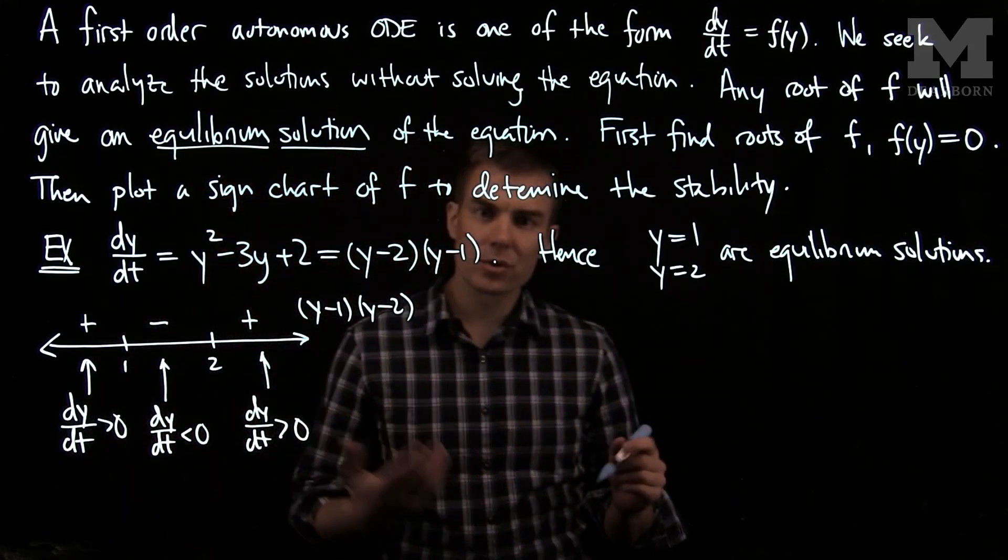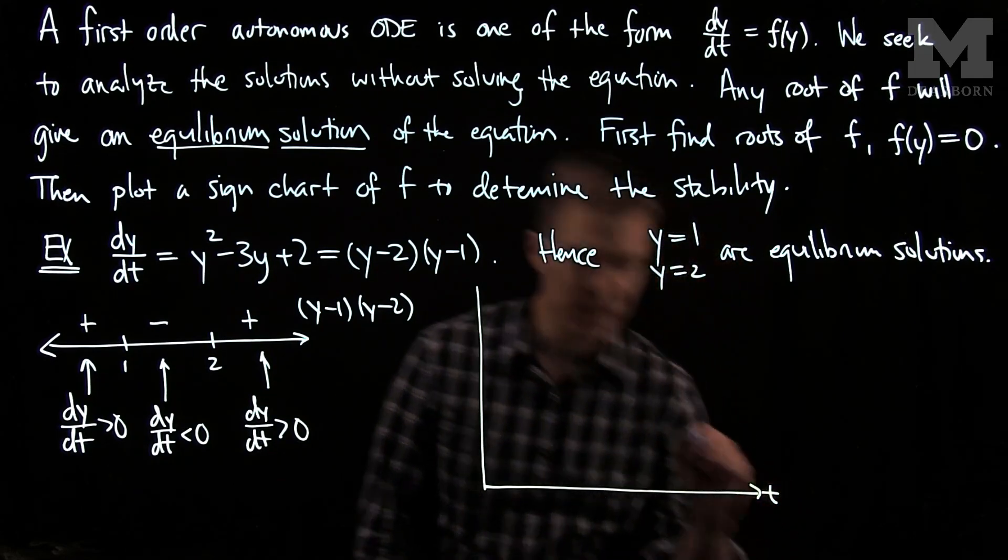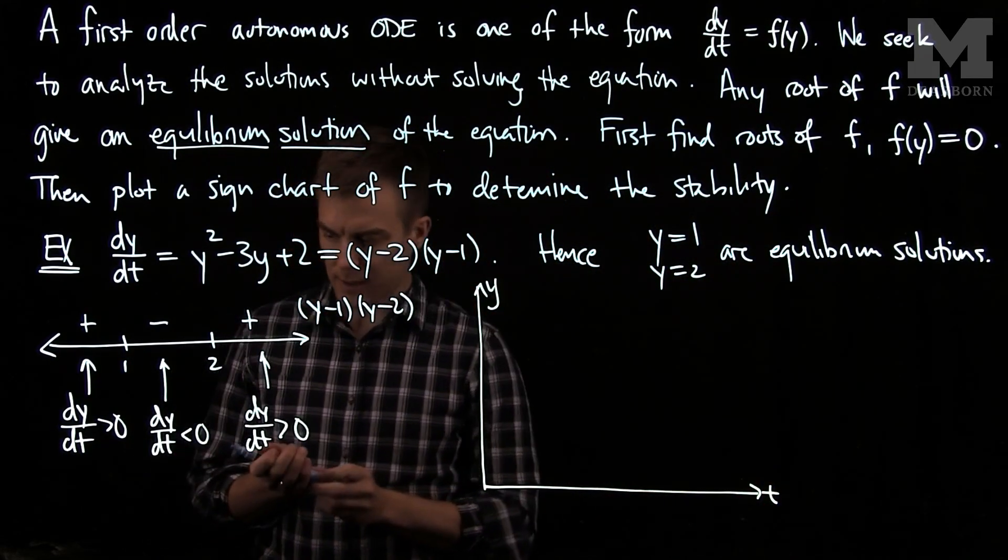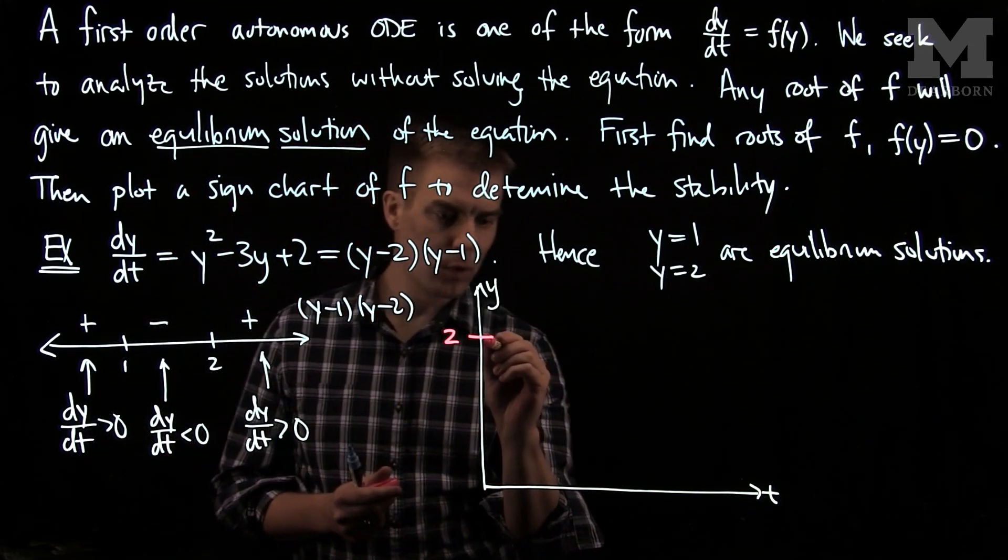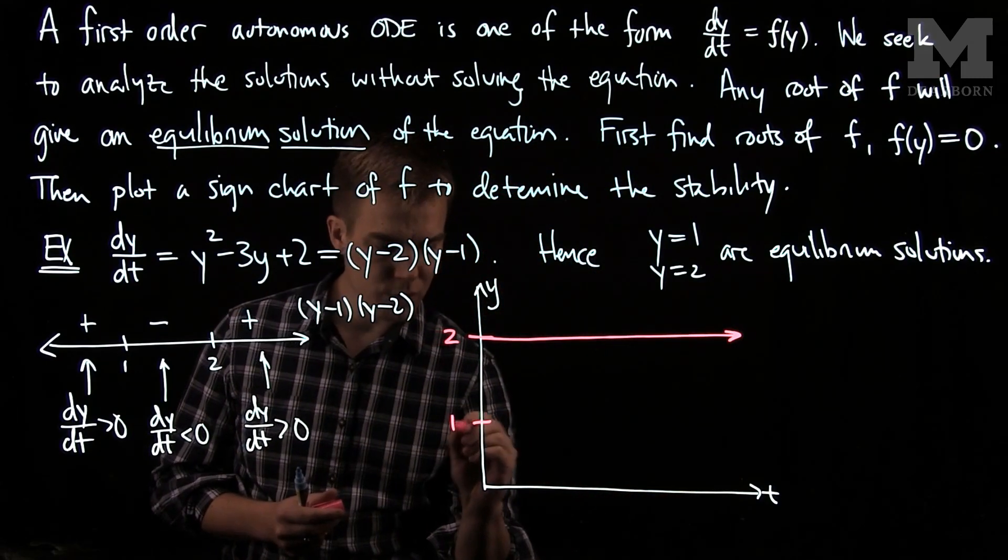Let's try to plot some solutions of this equation. Here is the t-axis and here is the y-axis. And we will now plot the equilibrium solutions. There is an equilibrium solution at 2, which just remains flat, and there is an equilibrium solution at 1.